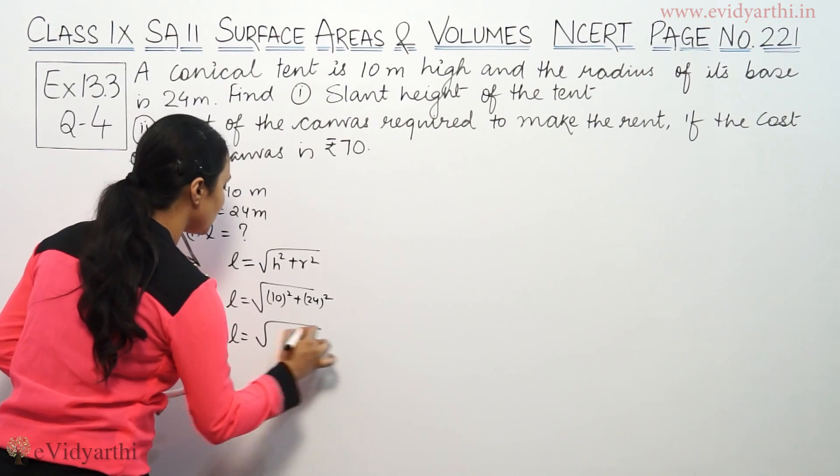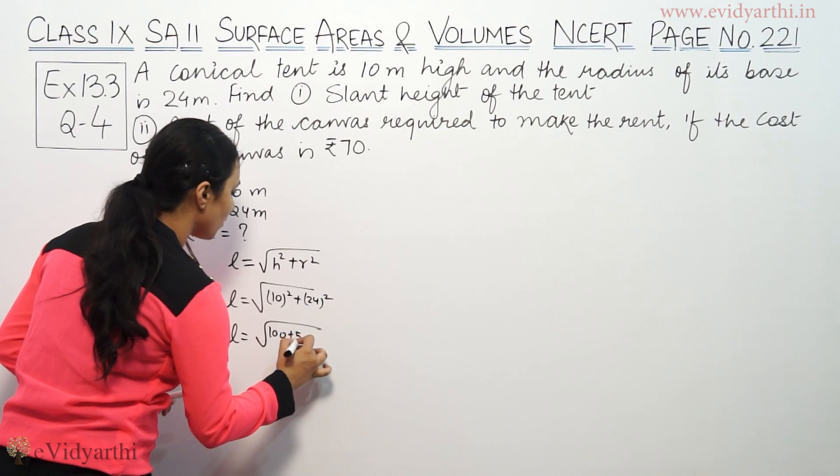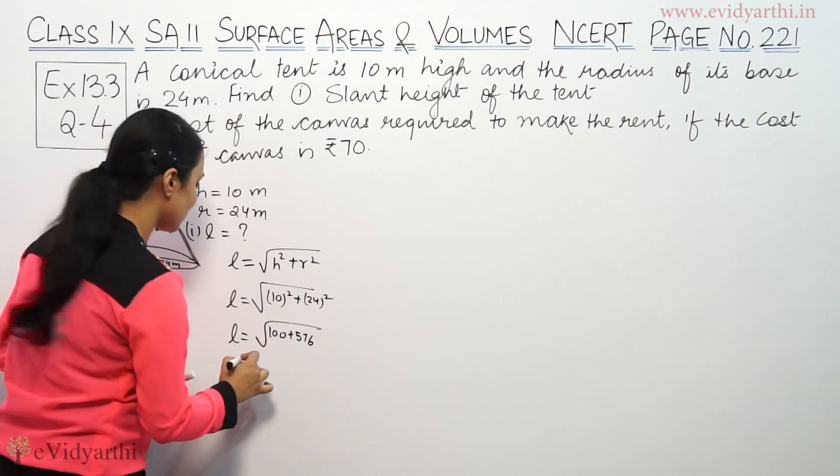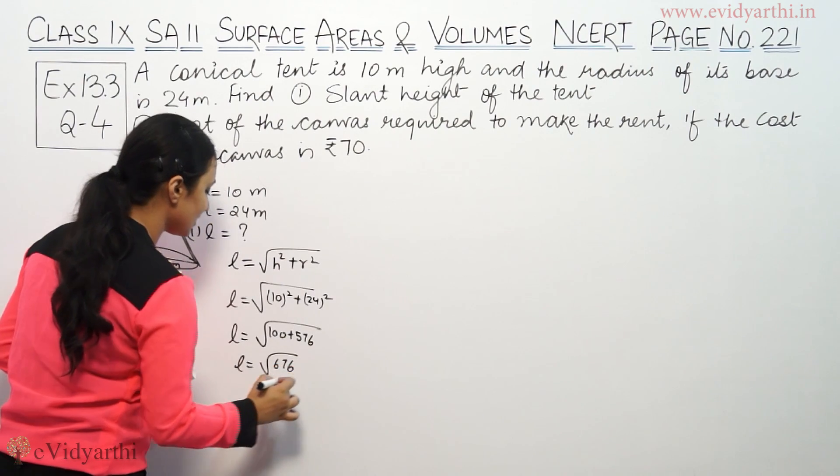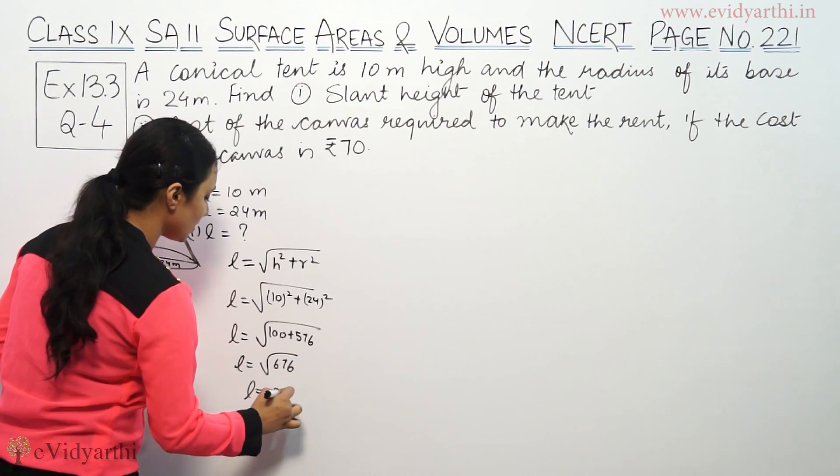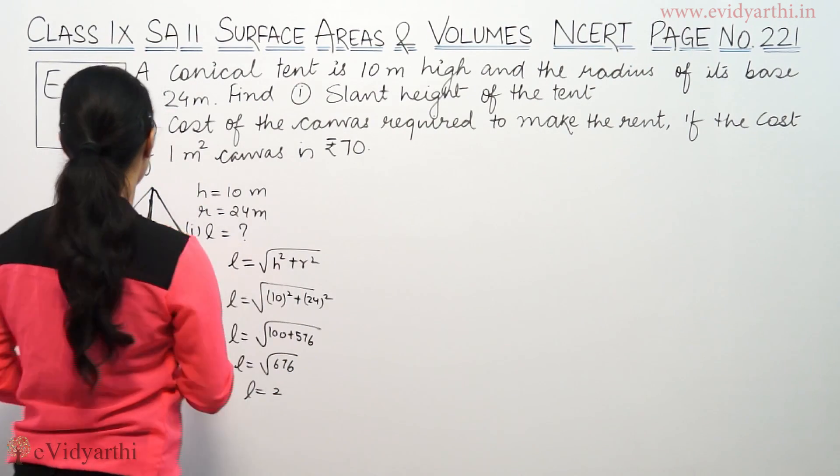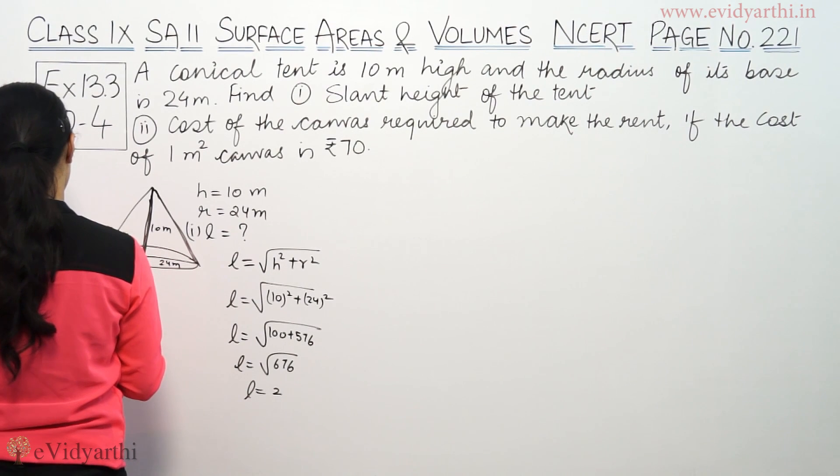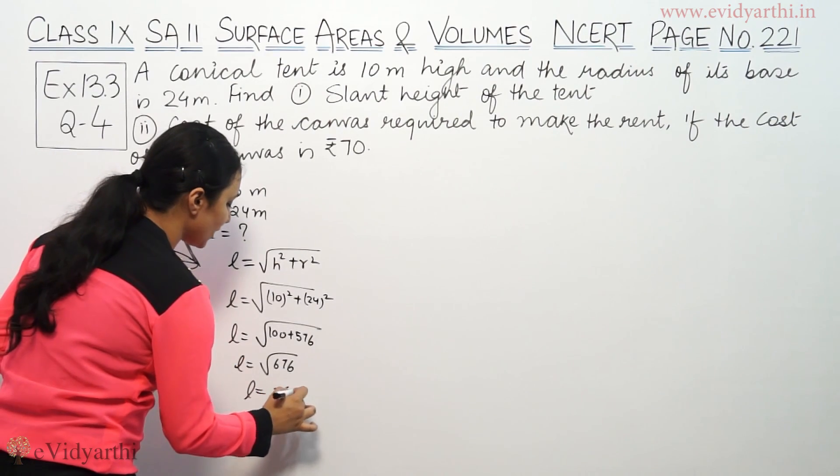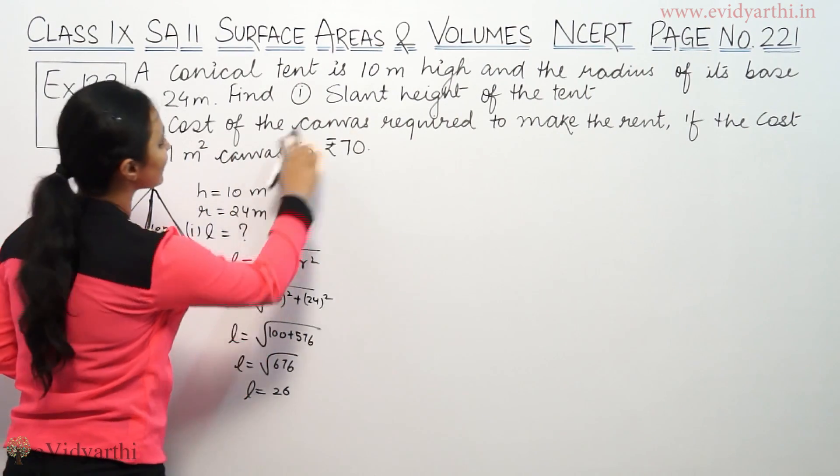L equals square root of 100 plus 576, which equals square root of 676, which equals 26. So L will be 26 meters.